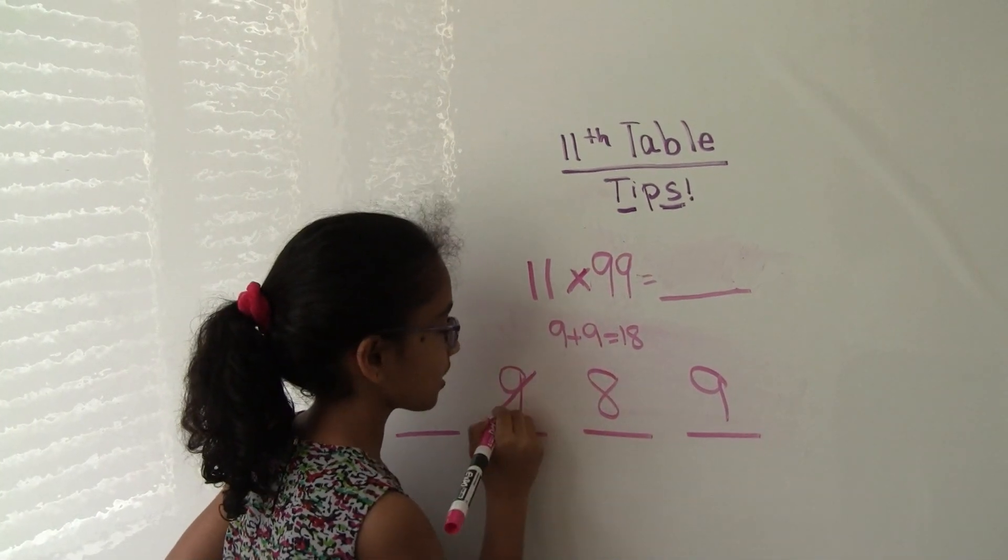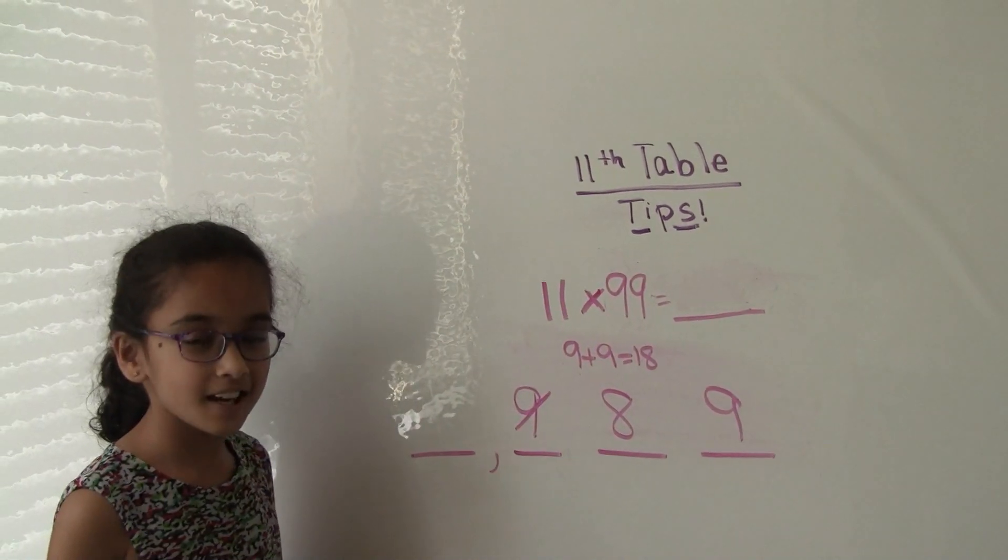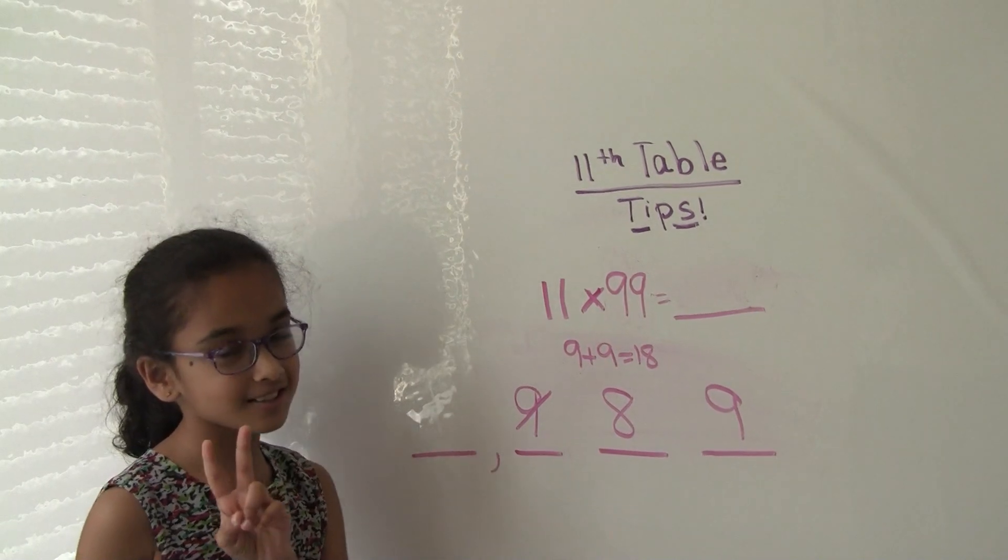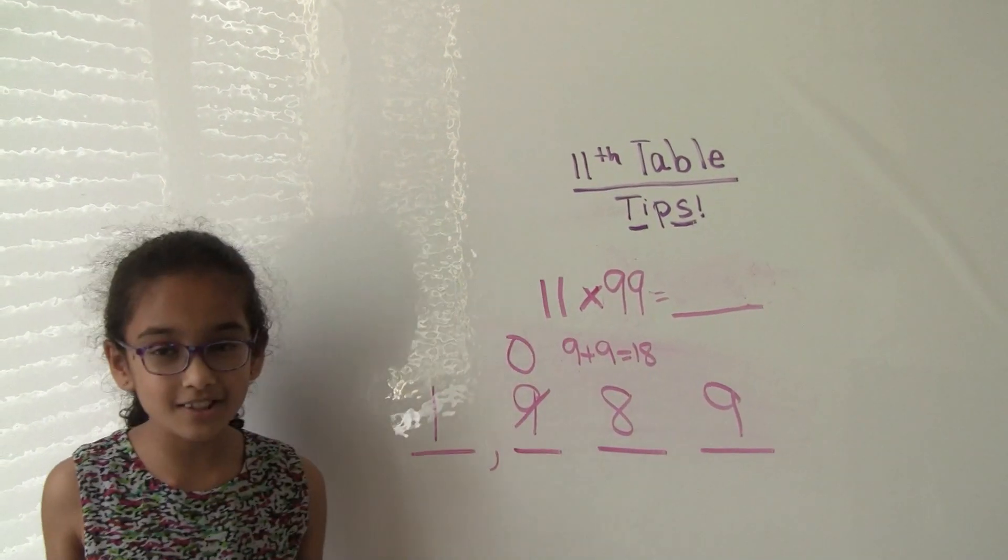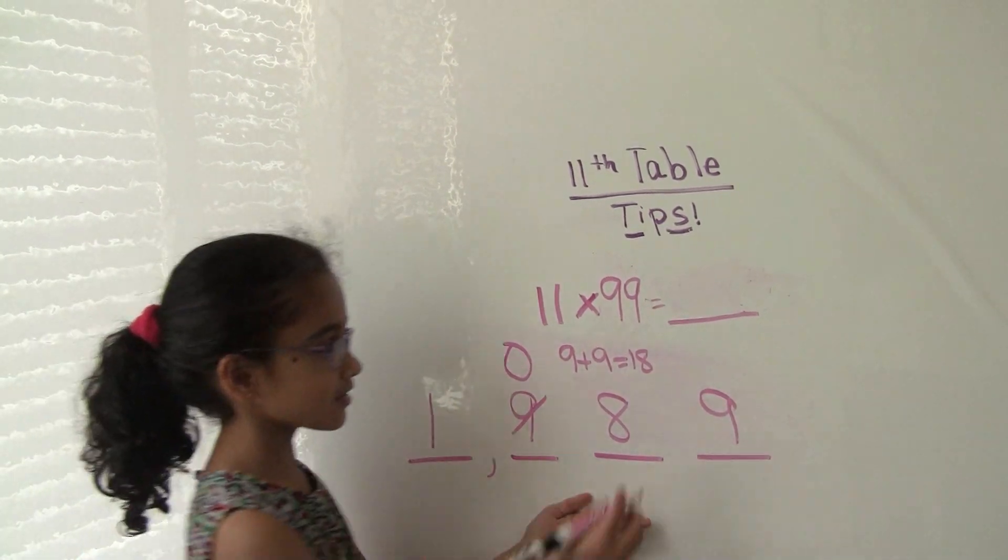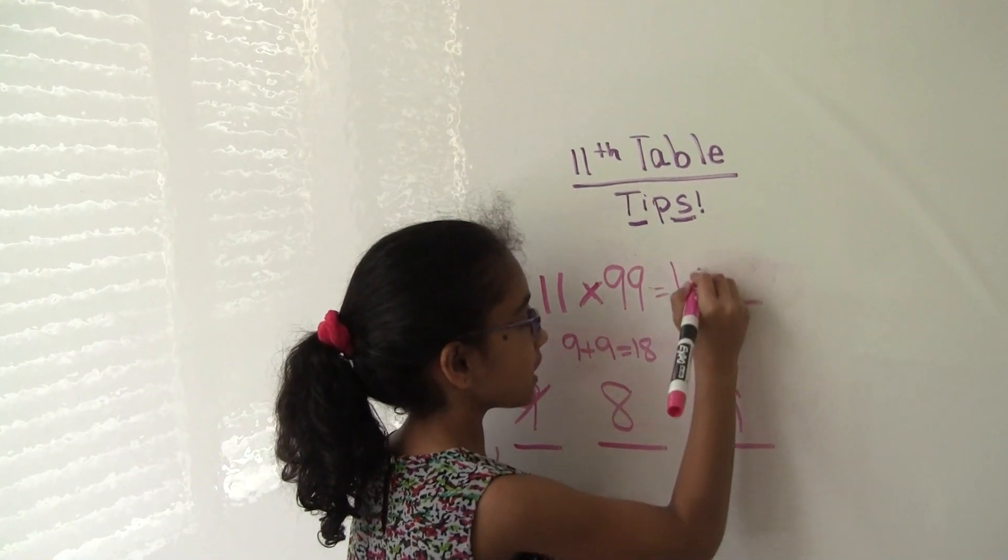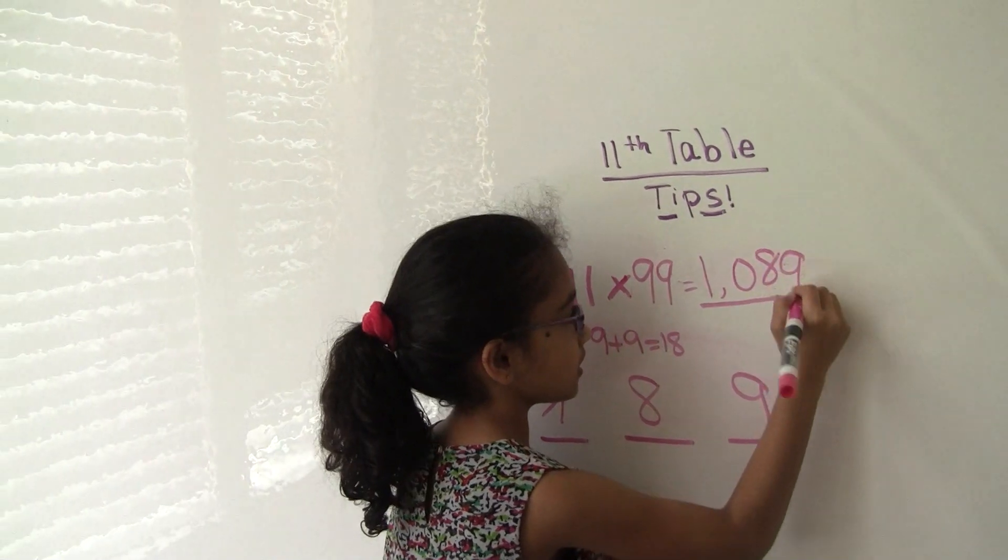Put 8 here. 9 plus 1 is 10. 10 has 2 digits. So put the 1 here and the 0 here. Looks like I was correct. We did go into the thousands. Here our answer is 1,089.